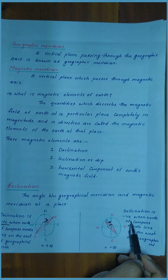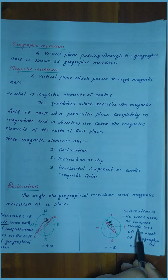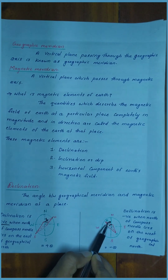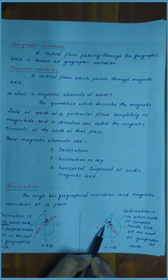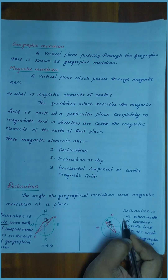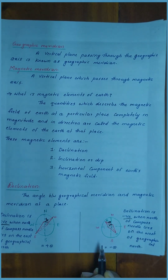Declination is negative when the north of the compass needle lies on the west of geographical north — that is, when the compass needle's north points to the west side of geographical north, the declination will be negative.